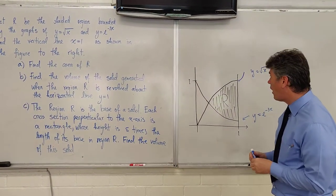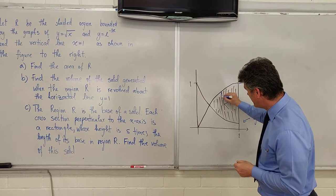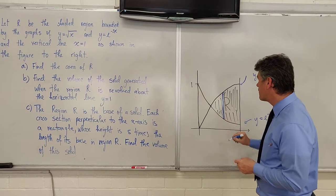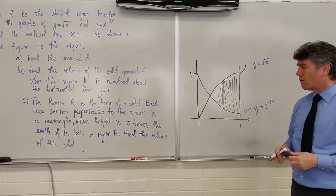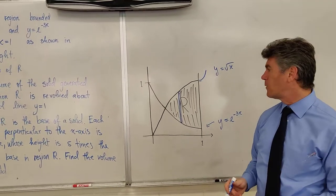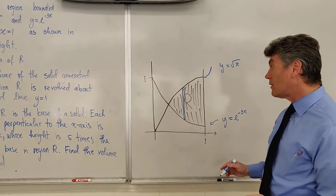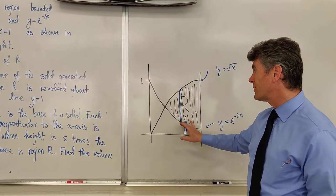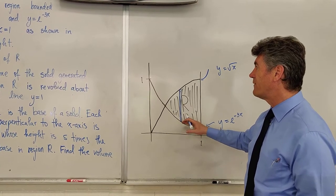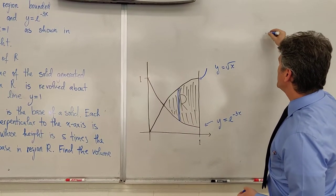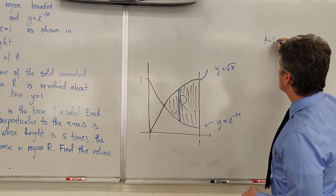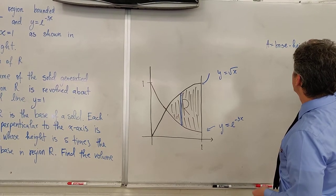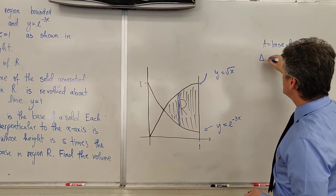The first thing that we do is we draw a representative rectangle. Because you remember a long time ago to find the area, what we did is we used a number of rectangles to approximate the area under the curve. The next thing that we do is we try to figure out a formula for the area of this rectangle.